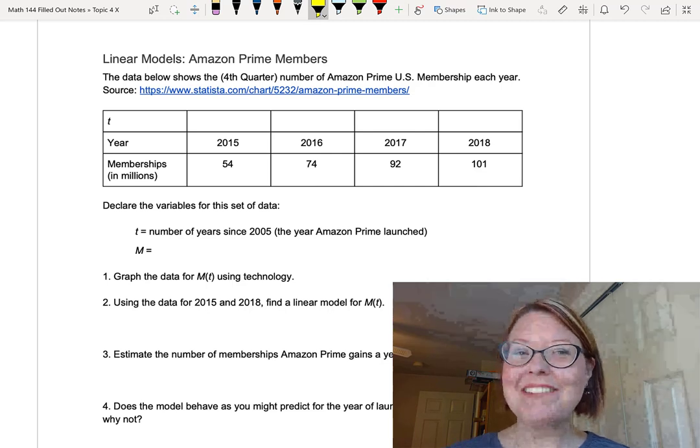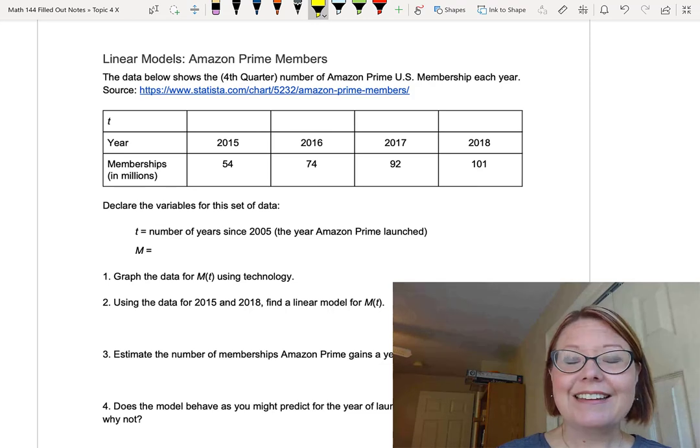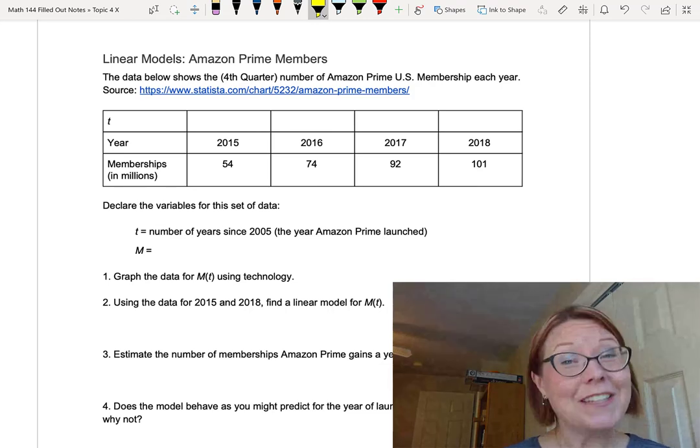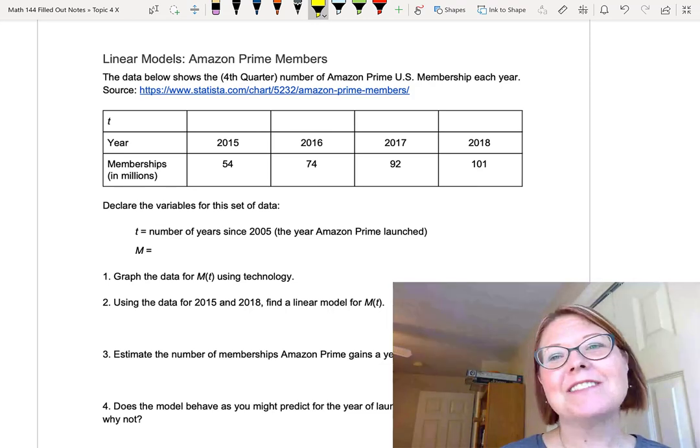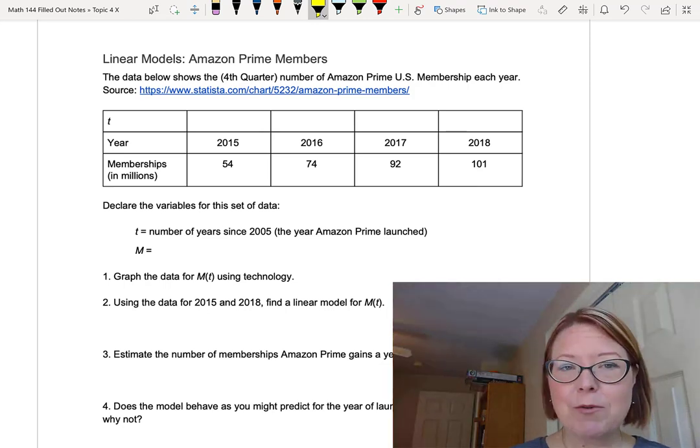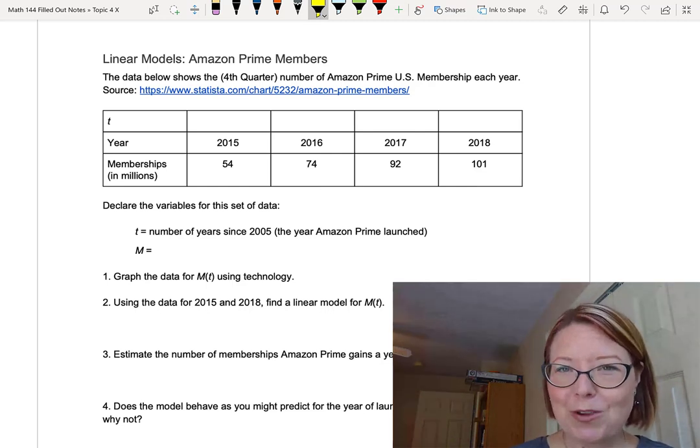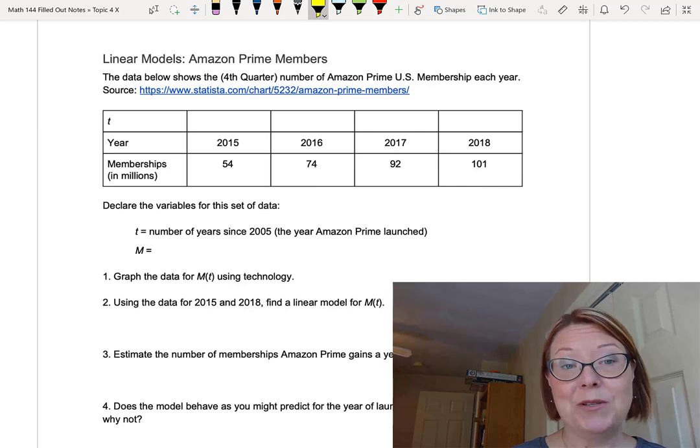In this video we're going to make a linear model for some data about Amazon Prime. As we know, data from the business world can be a little bit tricky because they measure data in quarters or months. The data in the table below shows the fourth quarter number for each year of Amazon Prime U.S. membership, and that's in millions.